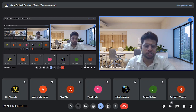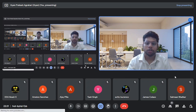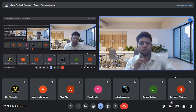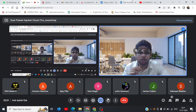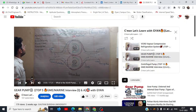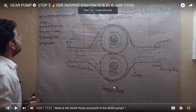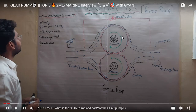Now the next important question about gear pump: how is negative pressure — suction pressure — created in a gear pump? You are seeing the picture now. Try to explain how this negative pressure is created and how the fluid is sucked in.